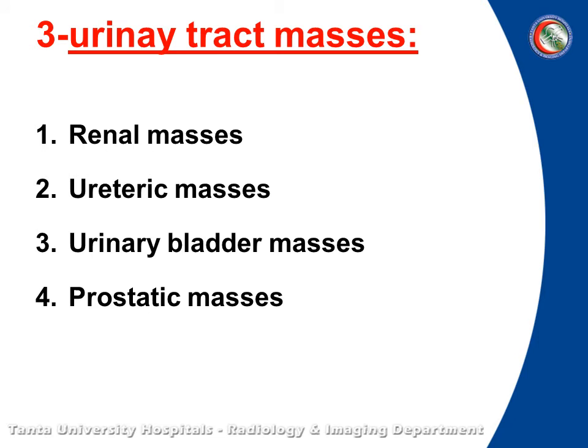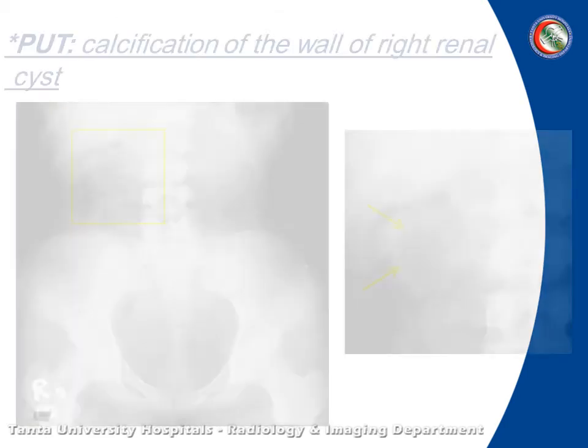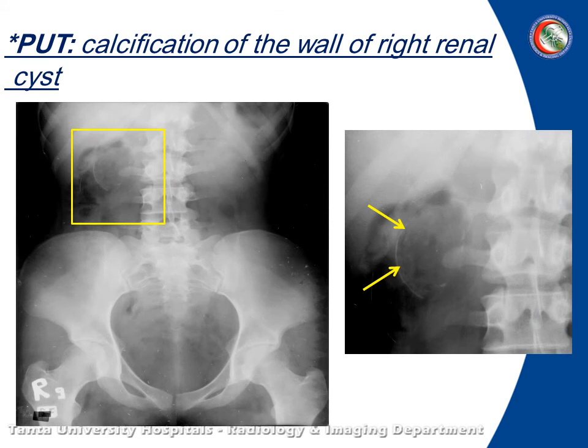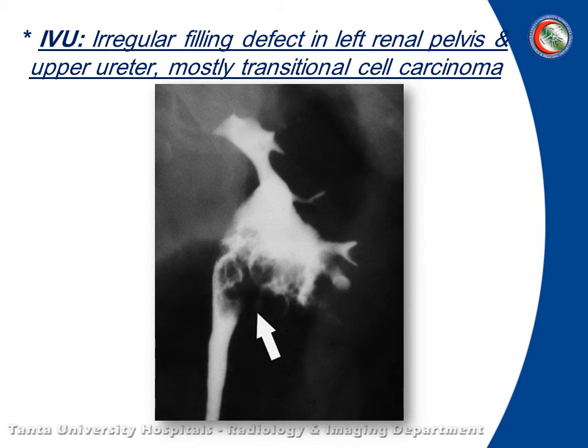In urinary tract masses, there are renal, ureteric, or urinary bladder masses, or extra-vesical prostatic masses. First, with renal mass — as you can see, there is a well-defined, faintly calcified shadow, likely for a calcified cyst. There is an irregular outline, ill-defined filling defect involving the pelvis and the upper ureter — mostly it is transitional cell carcinoma. Most malignant tumors are irregular with an irregular outline or ill-defined margins.